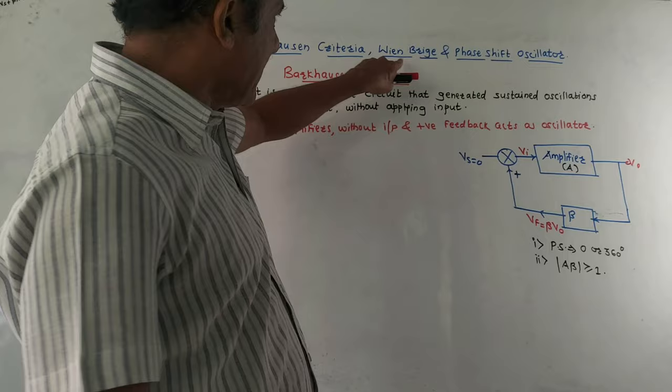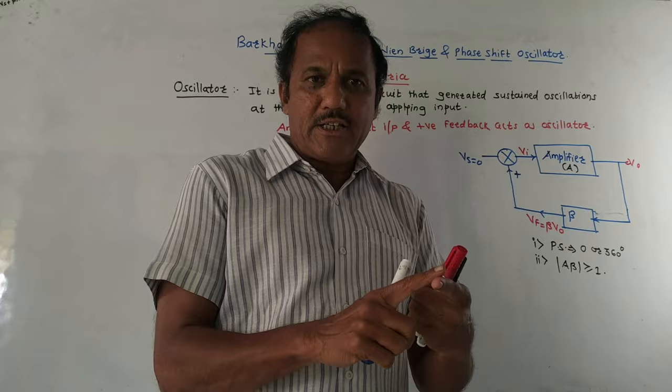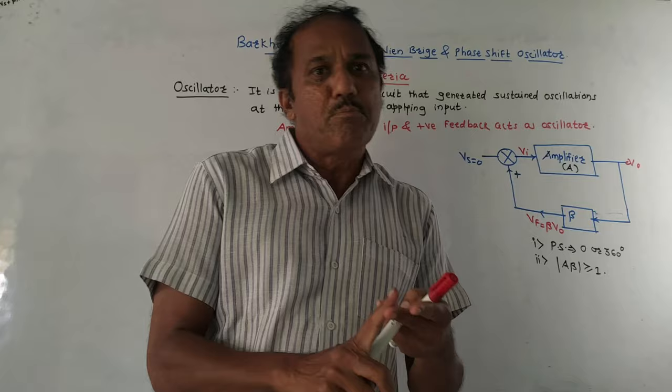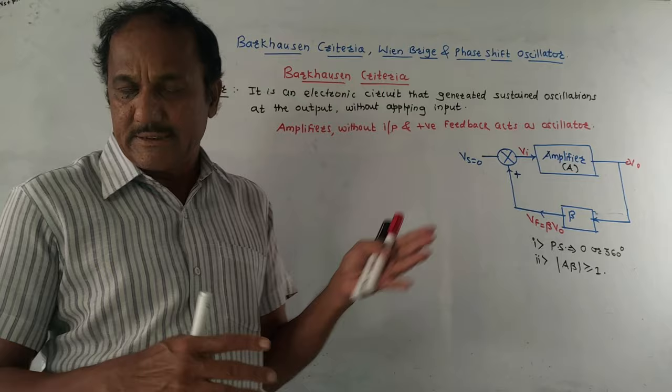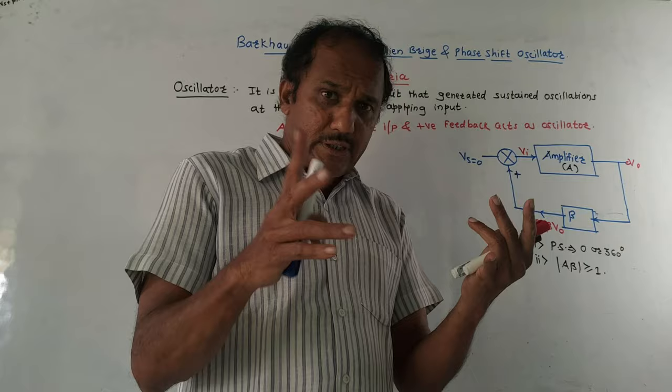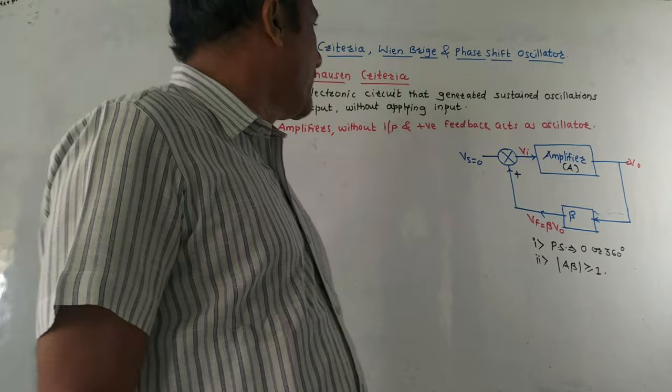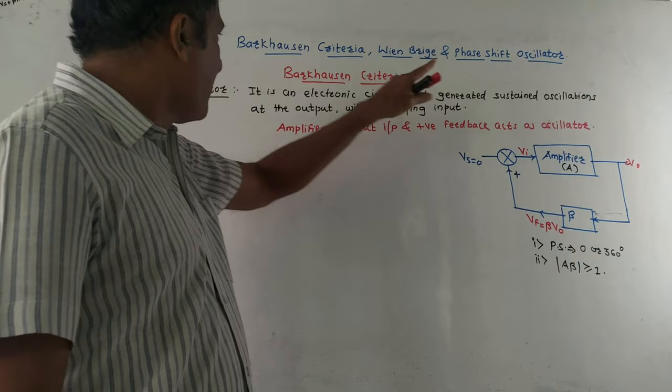Hello and welcome back to this channel. Today's topic is Barkhausen criteria, Wien bridge and phase shift oscillators. This is the last topic for unit number two of the electronic circuit subject. If you want a quick revision video, please let me know in the comments. Also, all videos related to unit one and two for electrical circuit subject have been uploaded, so please watch those.